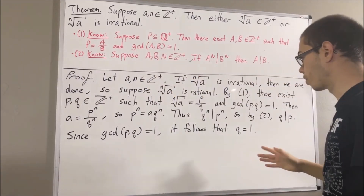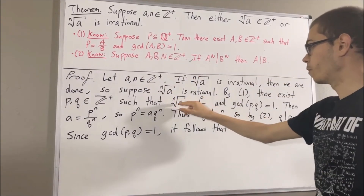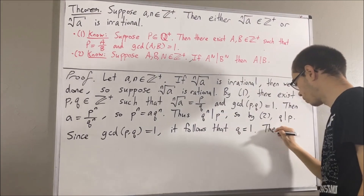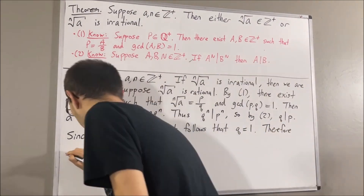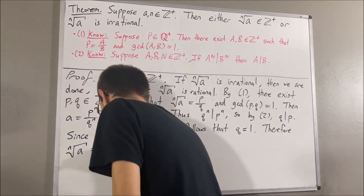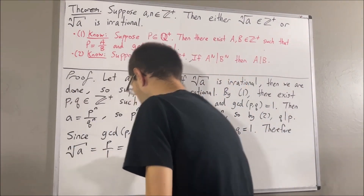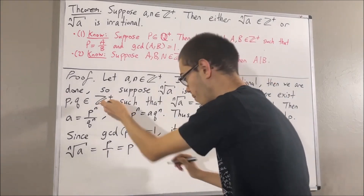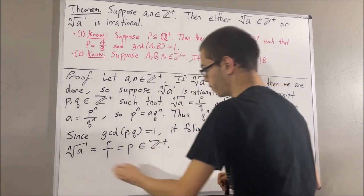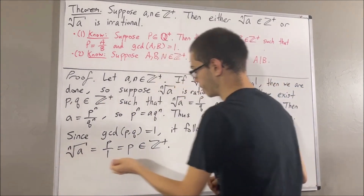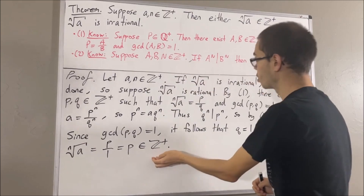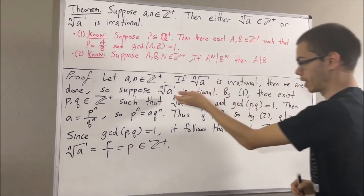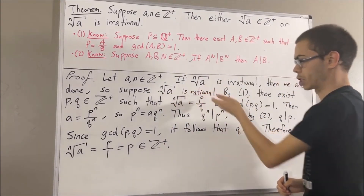And therefore, the n-th root of a is equal to P over 1, which is equal to P, which is a positive integer. And therefore, the n-th root of a is a positive integer, which is what we set out to show in the case where the n-th root of a is rational.